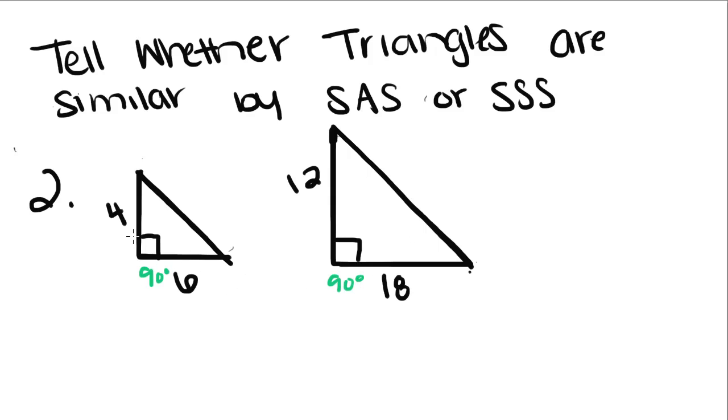So that means we're going to call this angle A and this angle D. So we know that angle A is congruent to angle D. So that's the A for this part.